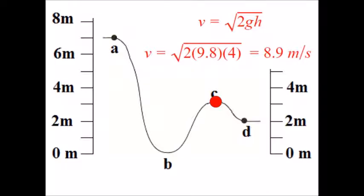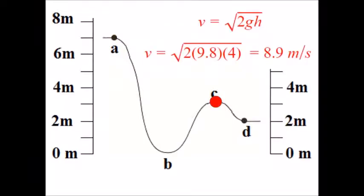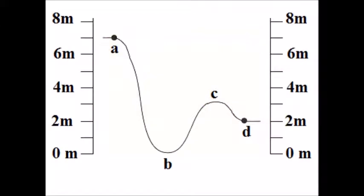That would be really difficult with kinematic equations since the track is curved and the acceleration would be changing — speeding up from A to B, slowing down from B to C. Instead, just consider starting at point A and ending at point C. This velocity of 8.9 meters per second is the velocity anywhere at that height. But if an experiment gives a little less than 8.9, friction is robbing kinetic energy — friction is doing work and changing the energy of the system.